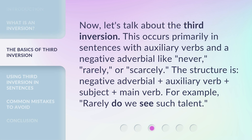Now, let's talk about the third inversion. This occurs primarily in sentences with auxiliary verbs and a negative adverbial like "never," "rarely," or "scarcely." The structure is: negative adverbial + auxiliary verb + subject + main verb. For example: "rarely do we see such talent."